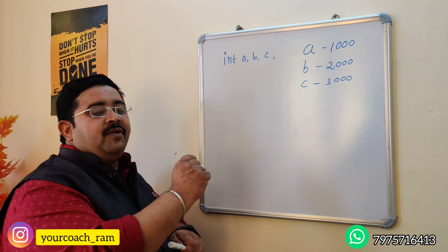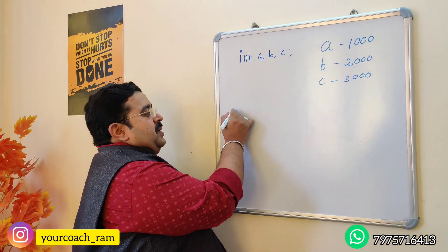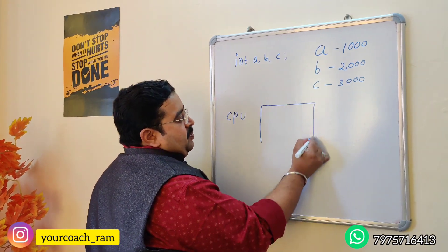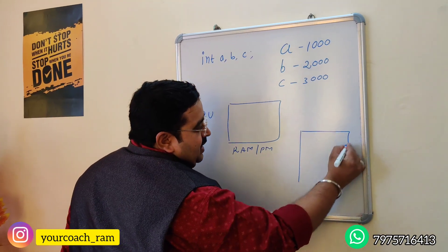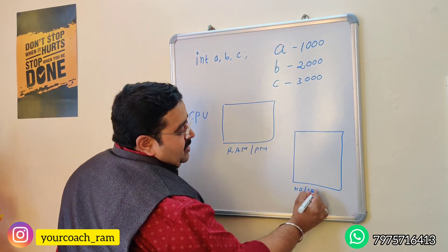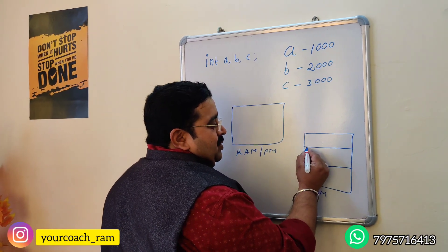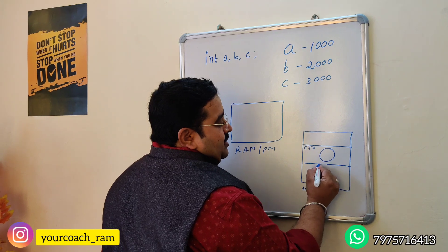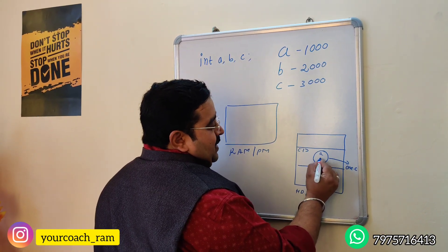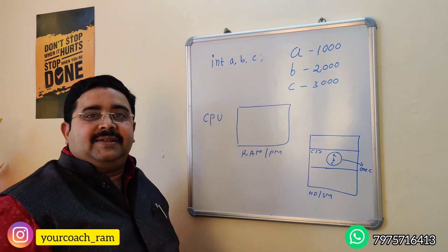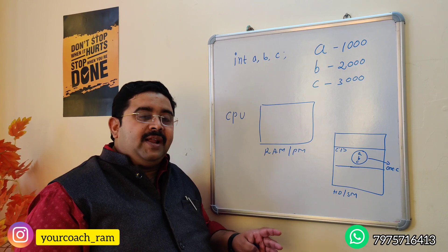One student declared the variables in a different way. Before giving the answer, let me explain the concept behind it. In a computer system there are three major components: the first is CPU, the second is RAM (also called primary memory), and the third is hard disk (also called secondary memory). When you save any program, it goes and sits in the hard disk.